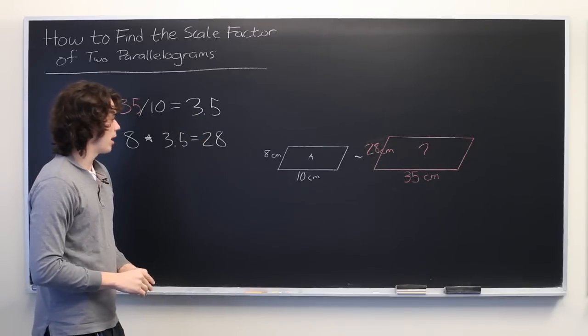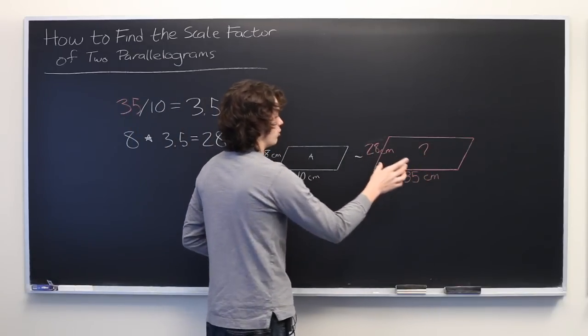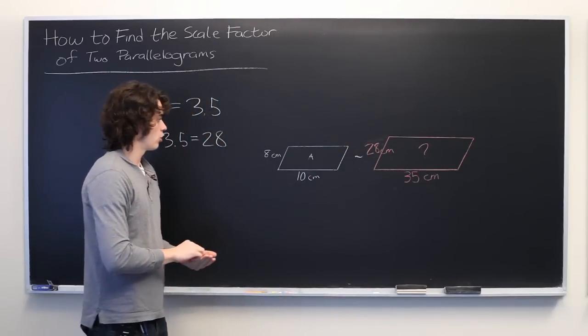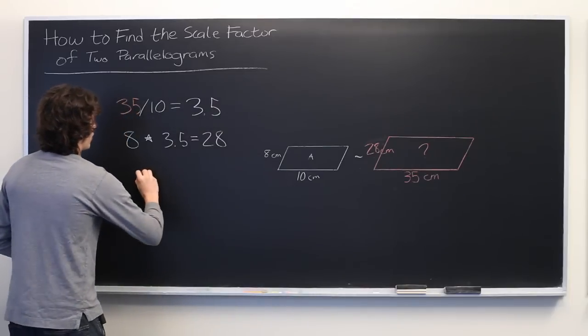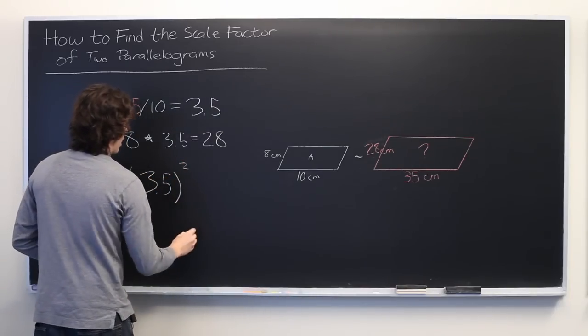But it's important to keep in mind that the area increases proportionally to the square of the sides, not to the sides themselves. So what we actually want to do is find 3.5 squared times A.